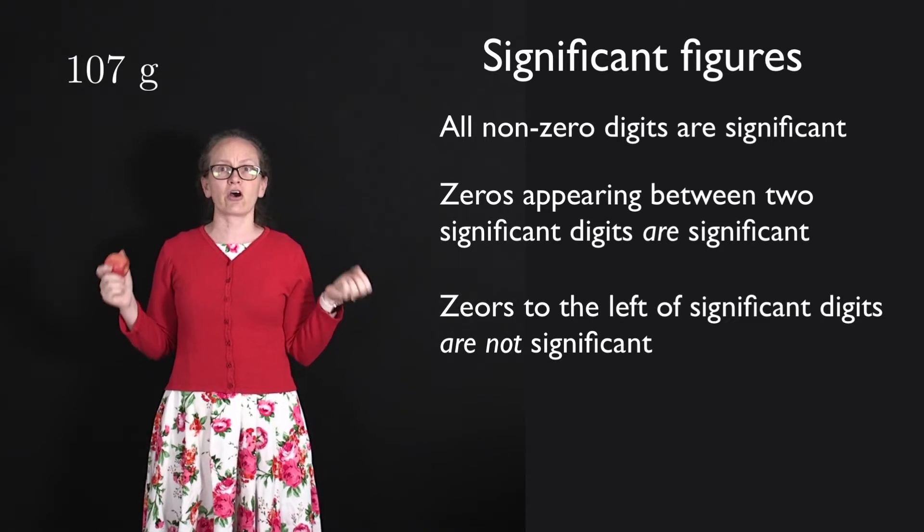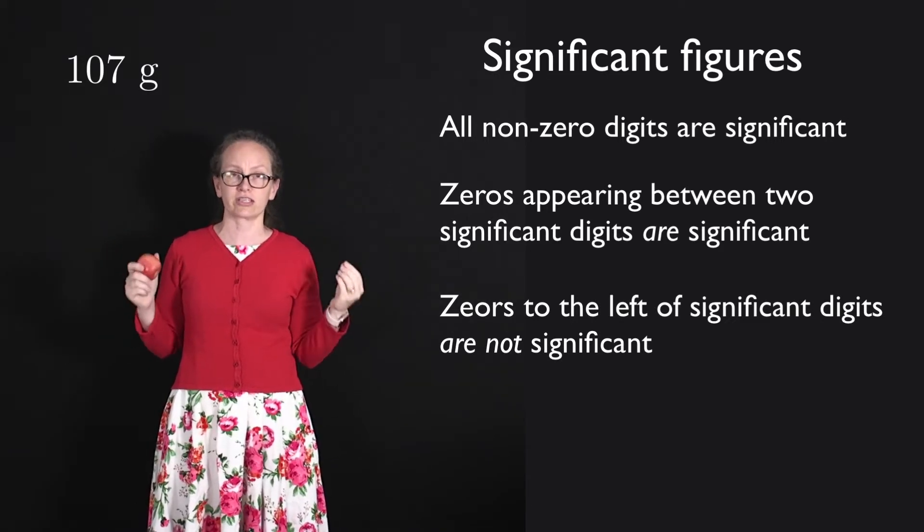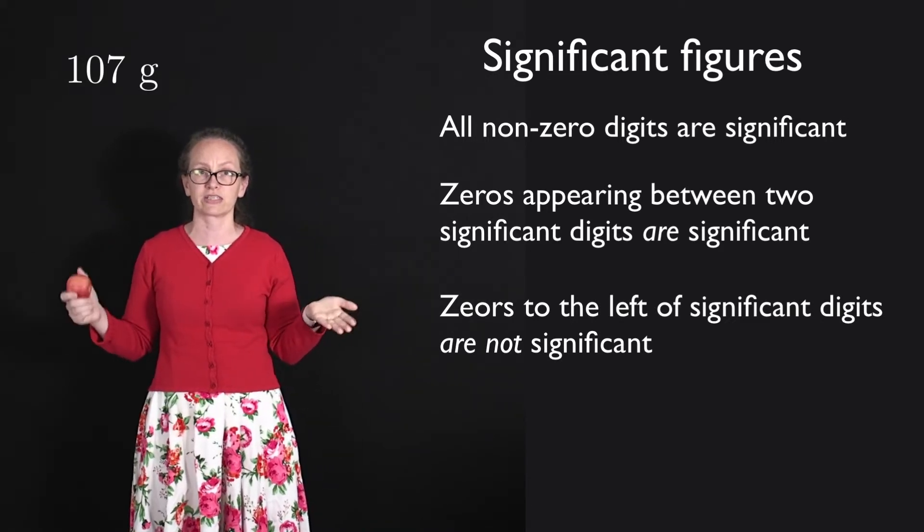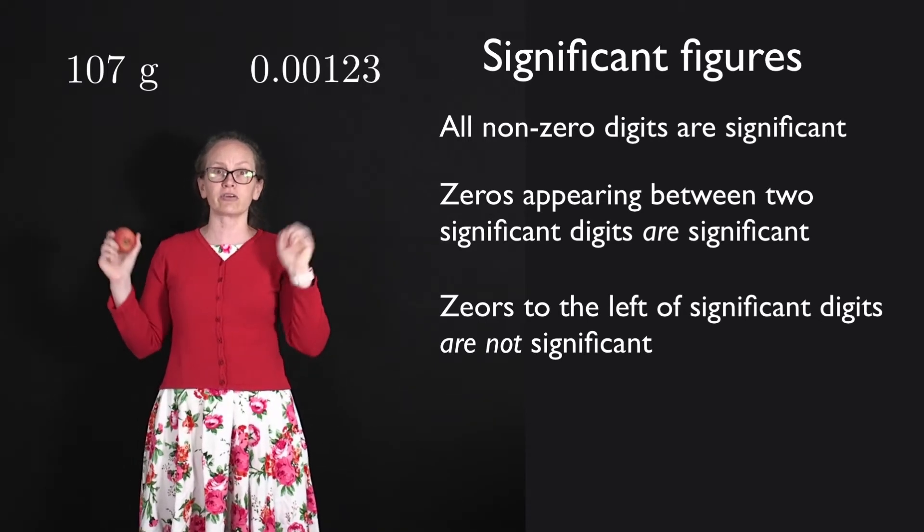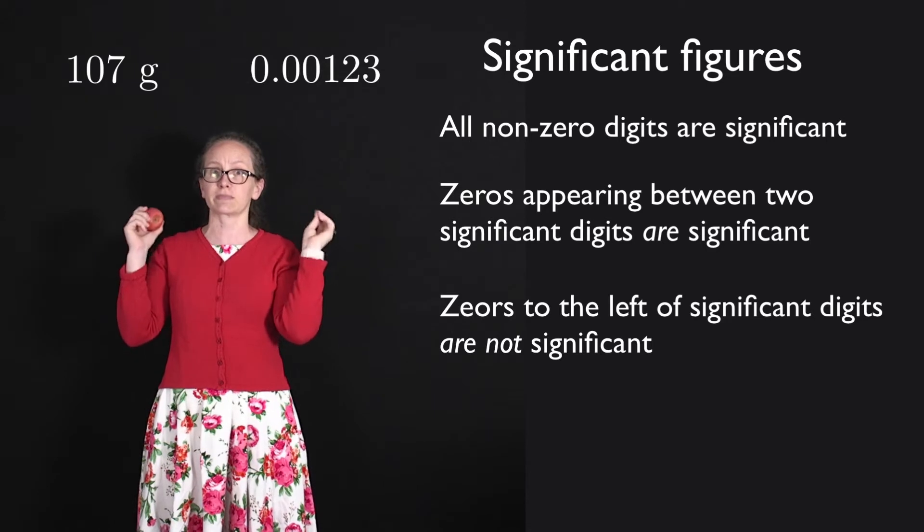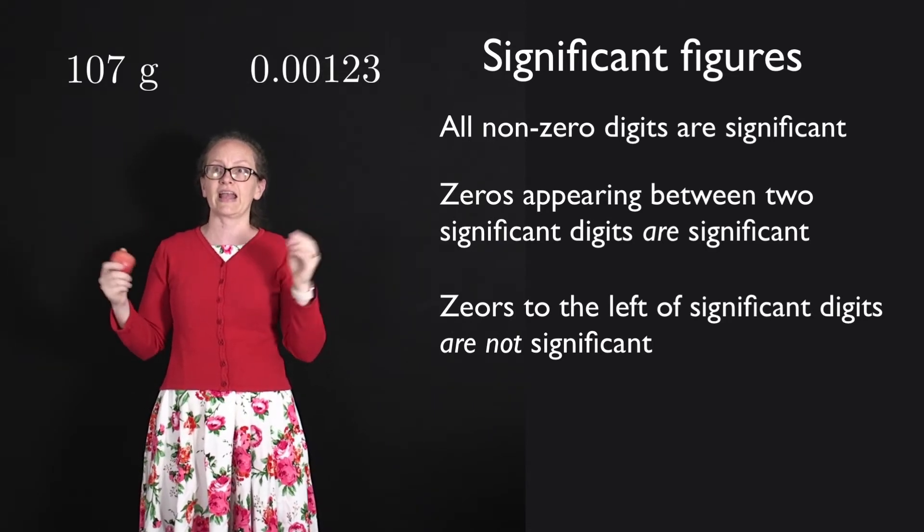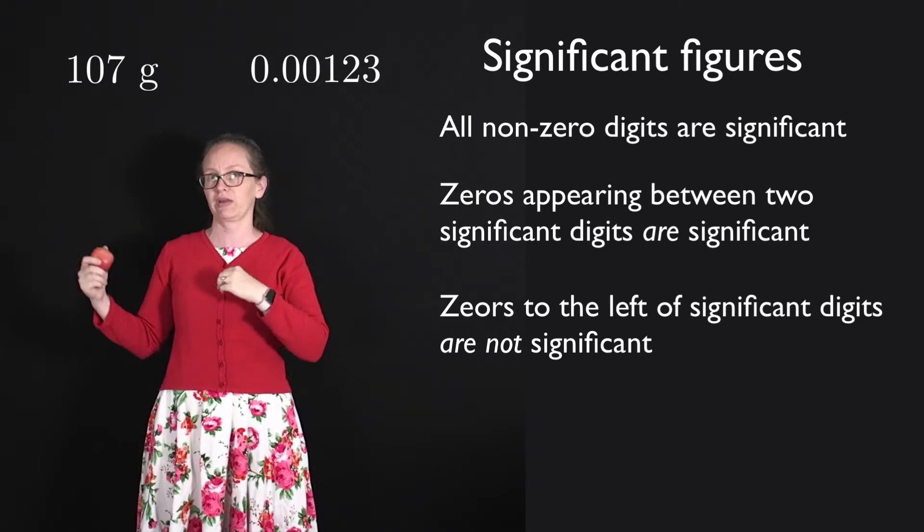Zeros to the left of significant figures are not significant. So for example, if you consider the number 0.00123, the zeros there are not significant. They are just placeholders to indicate how big our 123 is.